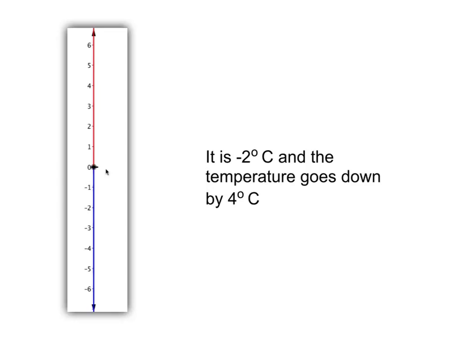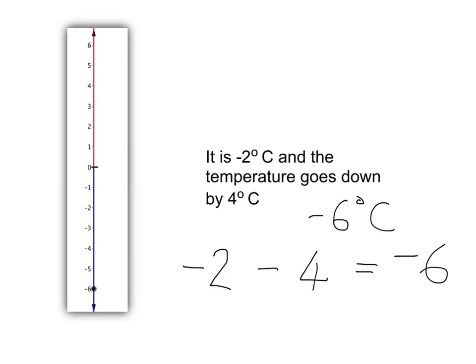Now if we start at negative 2 degrees centigrade and the temperature goes down even further by 4 degrees centigrade, our picture will look like this. We start at negative 2 and then come down 1, 2, 3, 4 degrees centigrade, and end up at negative 6 degrees centigrade. We can summarise this by saying if we are at negative 2 and we take off a further 4, we'll end up at negative 6 degrees centigrade.